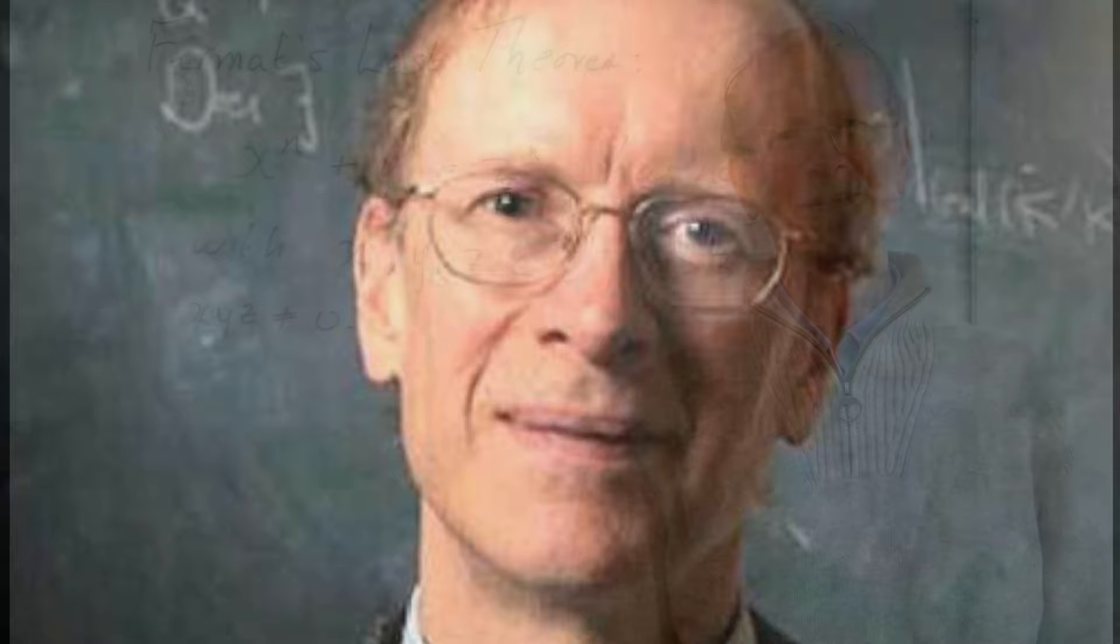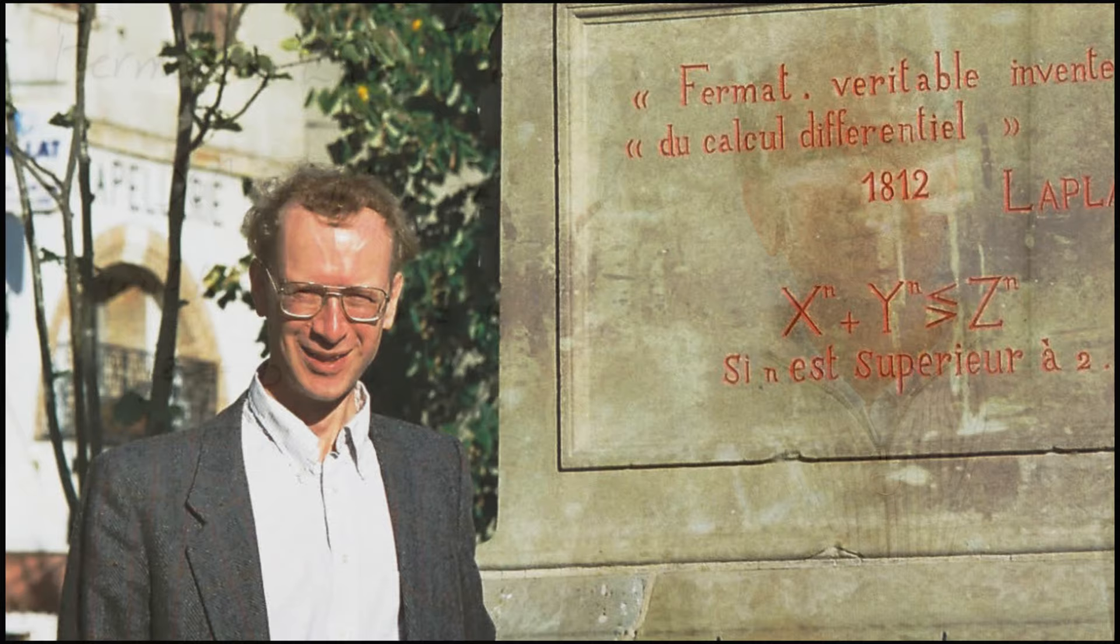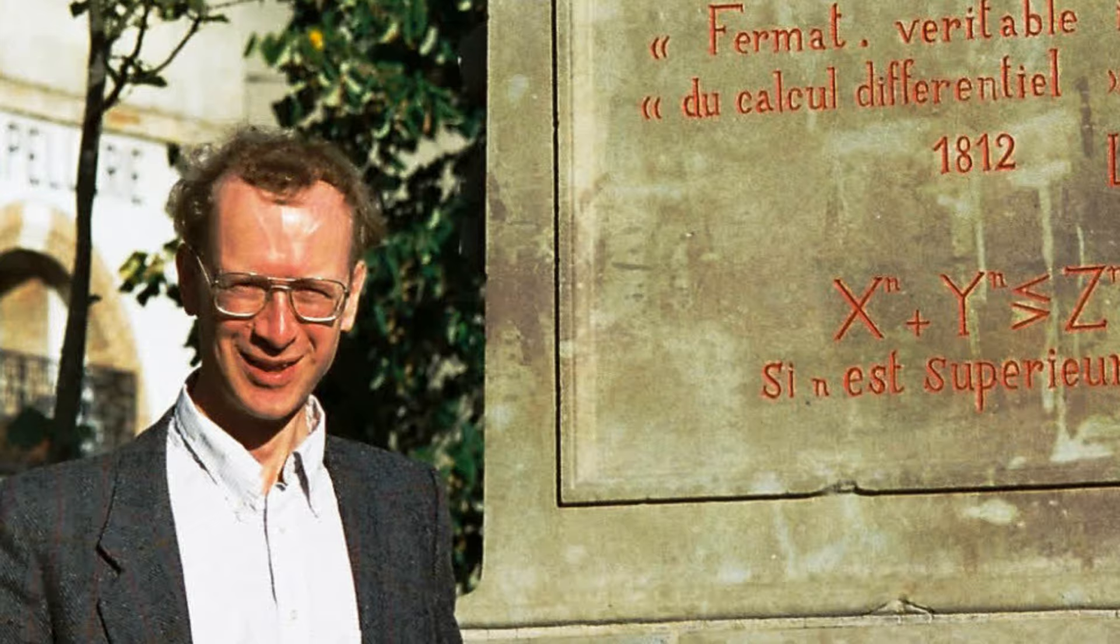Number 4. Andrew Wiles. Andrew Wiles, an eminent English mathematician, is best known for proving Fermat's last theorem, one of the most famous unsolved problems in mathematics, in 1994. His groundbreaking proof, after years of intense research, combined advanced techniques from number theory, algebraic geometry, and modular forms. Wiles' achievement resolved a centuries-old conjecture and garnered worldwide acclaim, solidifying his place as one of the greatest mathematicians of the modern era.